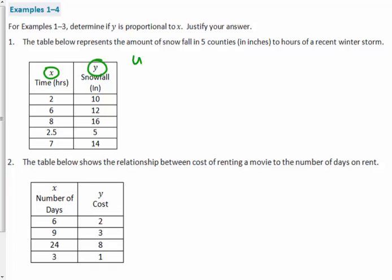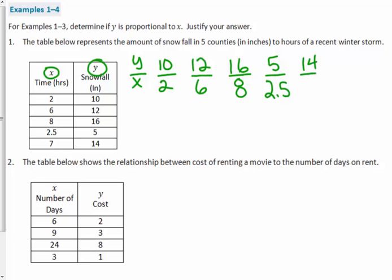Y is proportional to X, so I'm going to do Y over X. Y, the second thing in the table, 10 over 2, that's a 5 to 1 ratio. 12 over 6, that's a 2 to 1 ratio. 16 over 8, that's a 2 to 1 ratio. 5 to 2 and a half, that's a 2 to 1 ratio. And 14 to 7. These are all 2 to 1, but this one is not a 2 to 1 ratio. That's a 5 to 1 ratio.